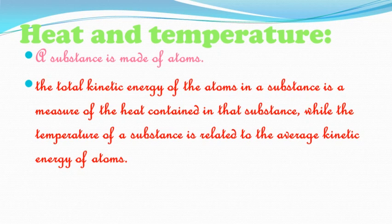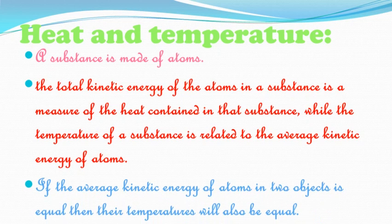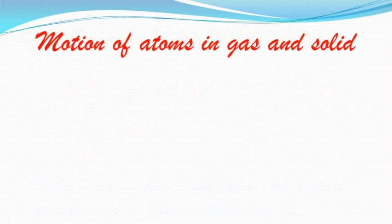Since atoms are continuously moving, they possess kinetic energy. The temperature of a substance is related to the average kinetic energy of its atoms. If the average kinetic energy of atoms in two objects is equal, then their temperatures will also be equal.